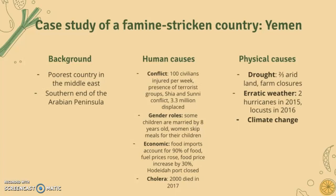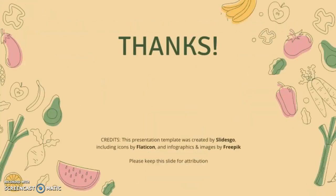Physically, two-thirds of Yemen's land is arid, making it infertile. There have been many farm closures due to conflict, erratic weather including two hurricanes in 2015, a locust infestation in 2016, and climate change exacerbating drought conditions.